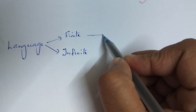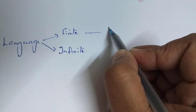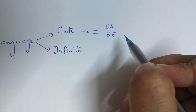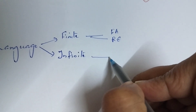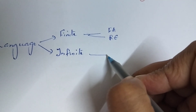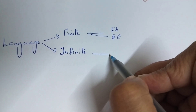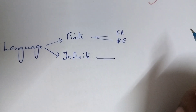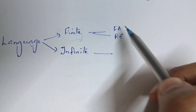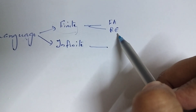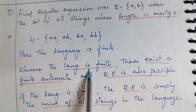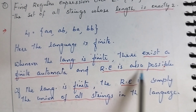If a language is finite, then we can represent it using a finite automata and we can also represent it mathematically using a regular expression. If the language is infinite, then we can check whether we can draw a finite automata and whether we can represent it using a regular expression — that is an upcoming topic. Definitely if the language is finite, we will have a finite automata and a regular expression is also possible.